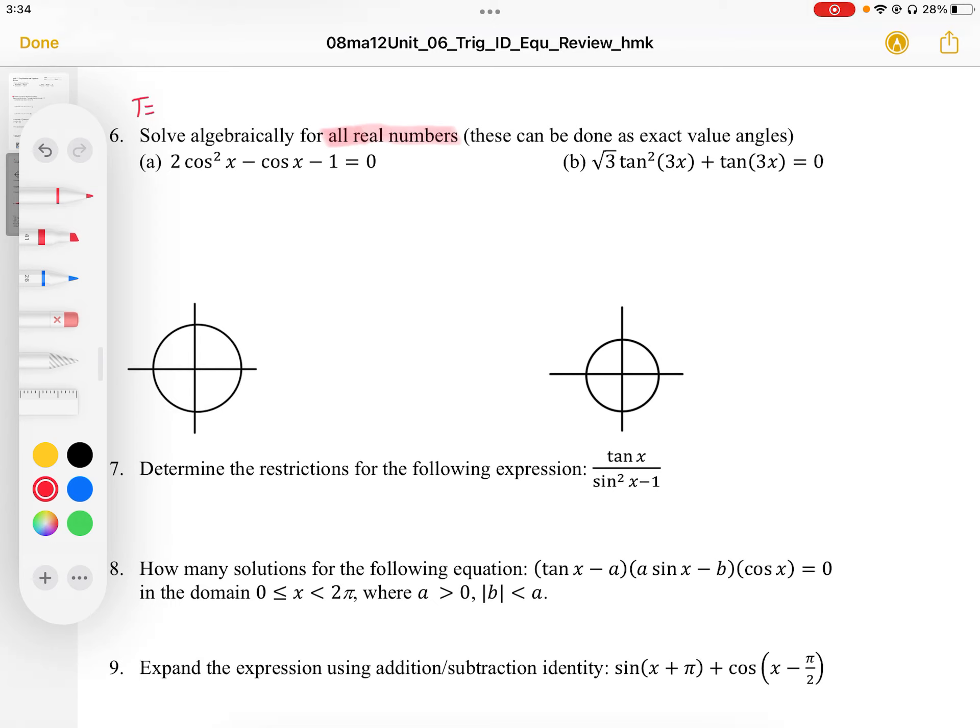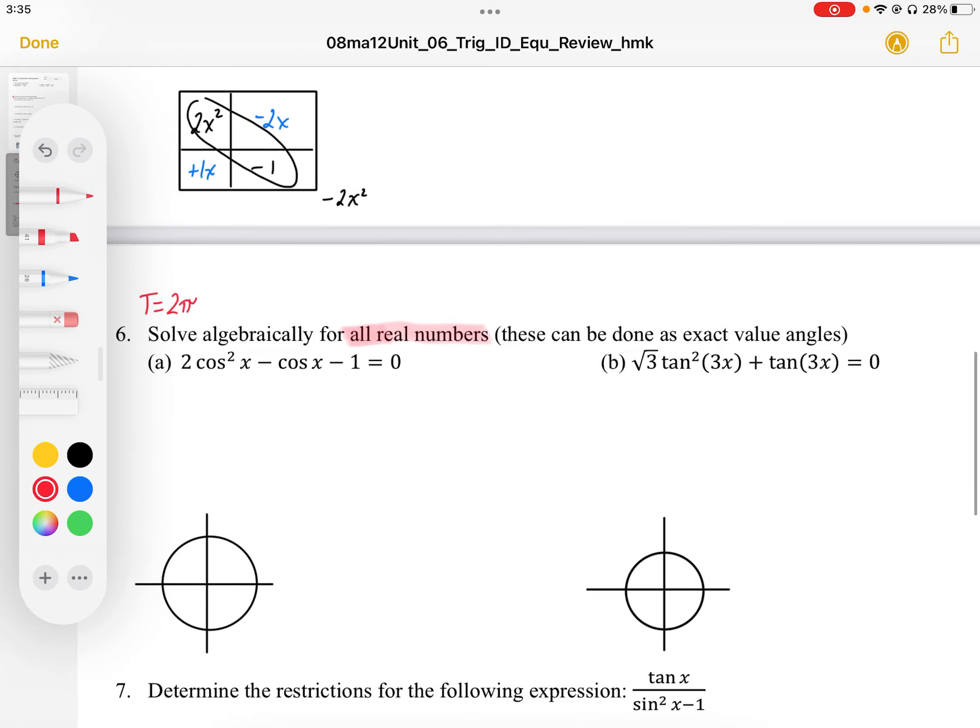The first thing I'm going to do, because it's all real numbers, is determine my period. There's no horizontal or vertical compression, so the period of the repetitions is going to be 2π. Then I need to factor this.